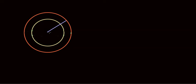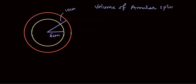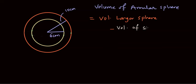Now, what if we had an annular sphere with an outer sphere and an inner sphere? Given that the radius of the outer sphere is 10 cm and the radius of the inner sphere is 6 cm, how can we find the volume of the annular sphere? Again, we look at the larger sphere and the smaller sphere, and the volume of the annular sphere would be the volume of the larger sphere minus the volume of the smaller sphere.